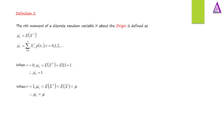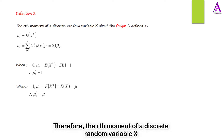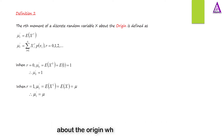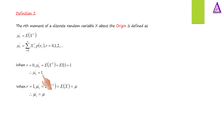When r equals 0, mu subscript 0 prime equals the expected value of x raised to power 0, which equals the expected value of 1, which equals 1. Therefore, the r-th moment of a discrete random variable x about the origin, when r equals 0, is equal to 1.